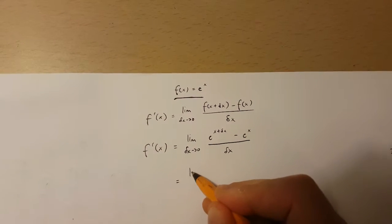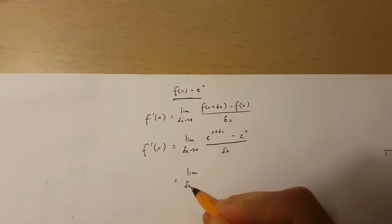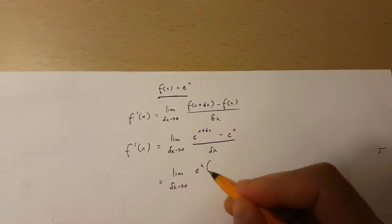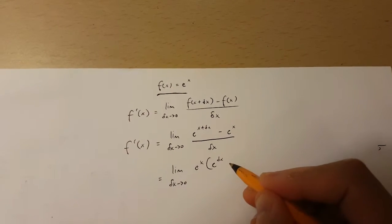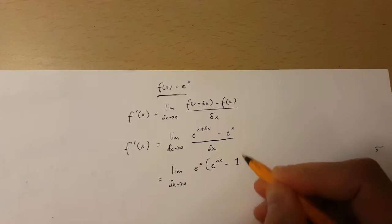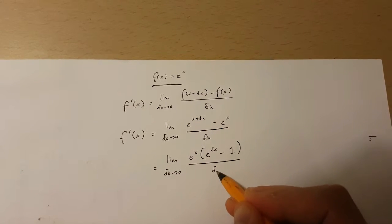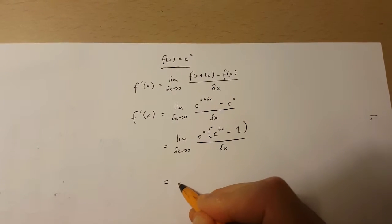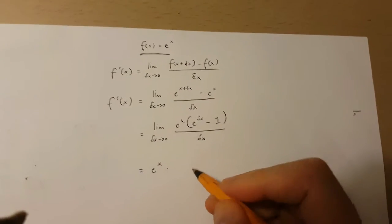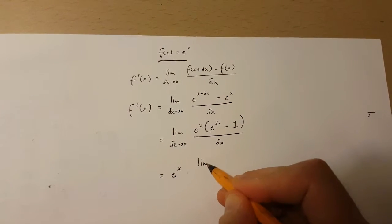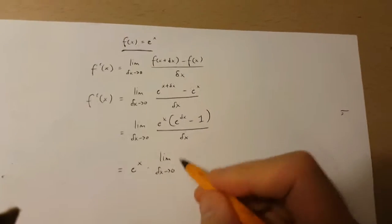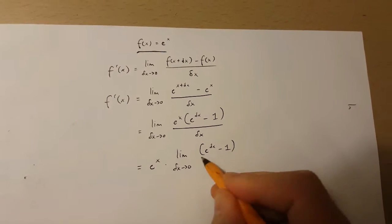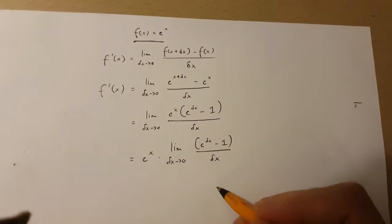And this is going to be equal to, in the limit as change in x approaches 0, e to the power of x times e to the power of change in x minus 1 in brackets over change in x. This is going to be equal to e to the power of x times the limit as change in x approaches 0 of e to the power of change in x minus 1 over change in x.